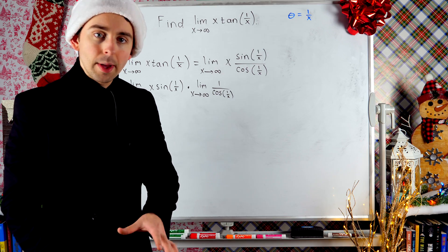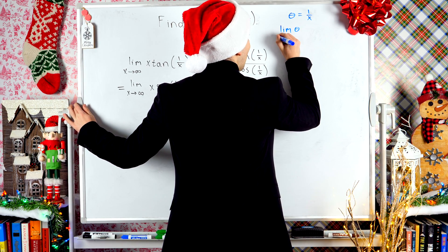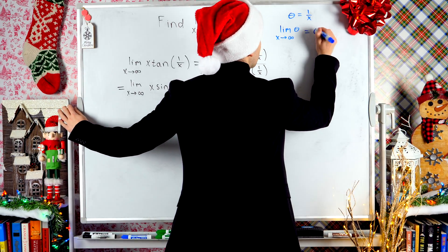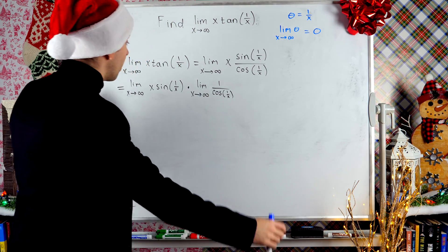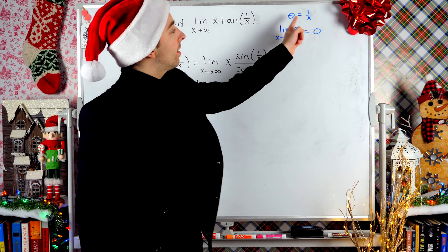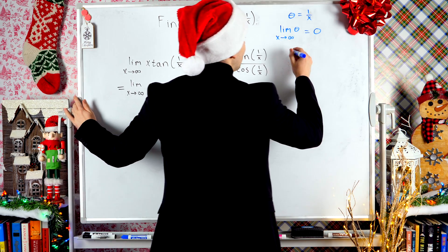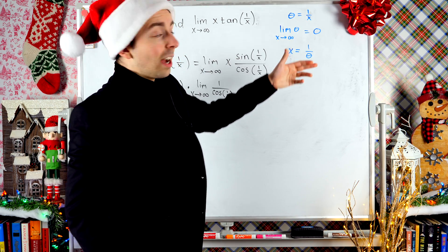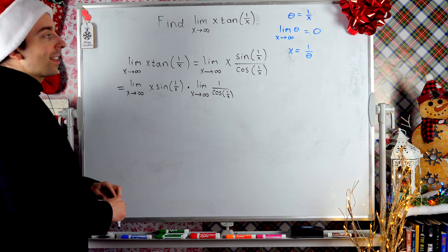So what's happening to theta as x approaches infinity? The limit of theta as x approaches infinity: well, theta is 1 over x, so as x approaches infinity, theta approaches 0 — it's just 1 divided by a really big number. Also notice that it's not just 1 over x that appears in our expression, but also plain old x. So if 1 over x is theta, what is x? If we invert both sides, we see that x is equal to 1 over theta. So now we can re-express these limits in terms of theta.